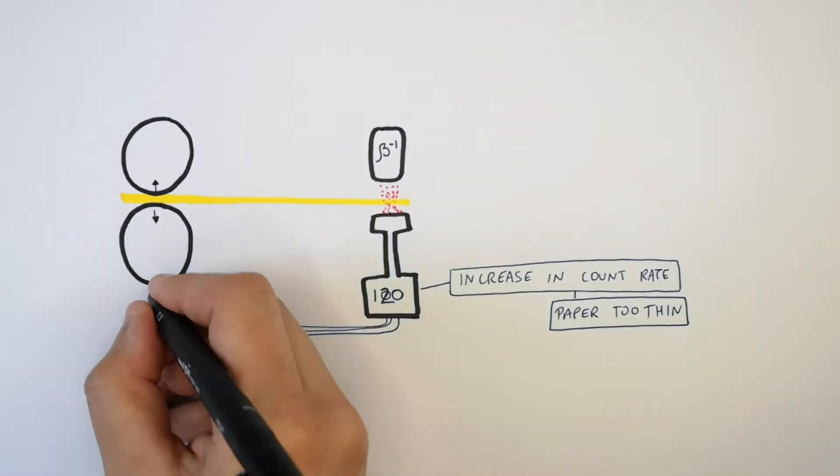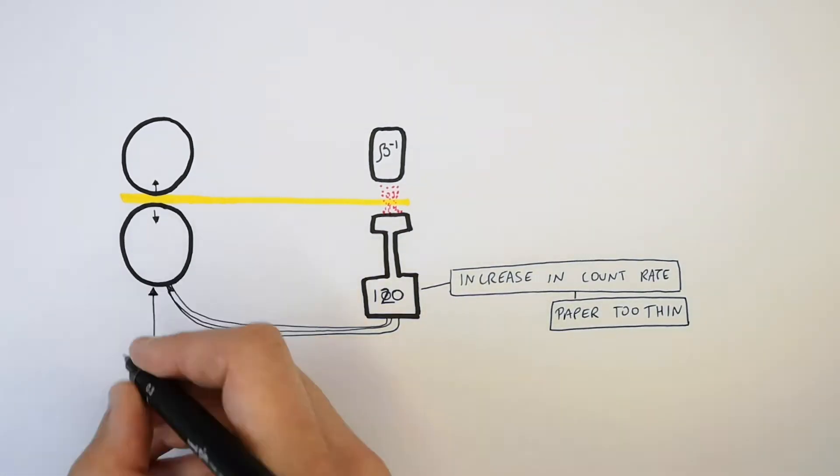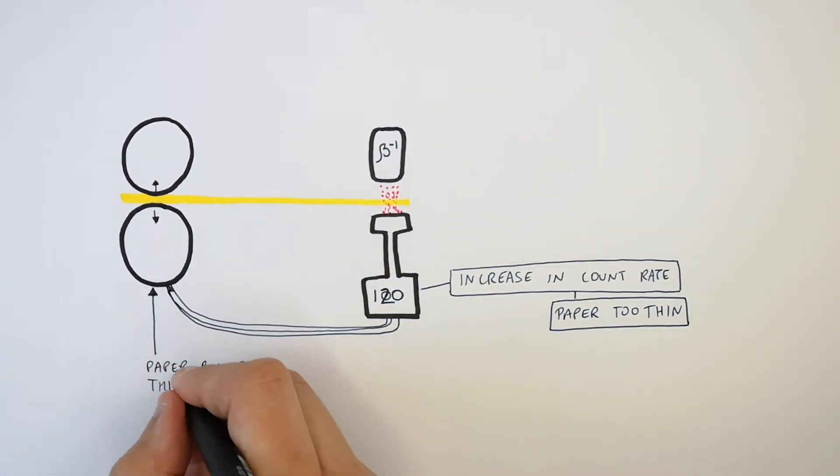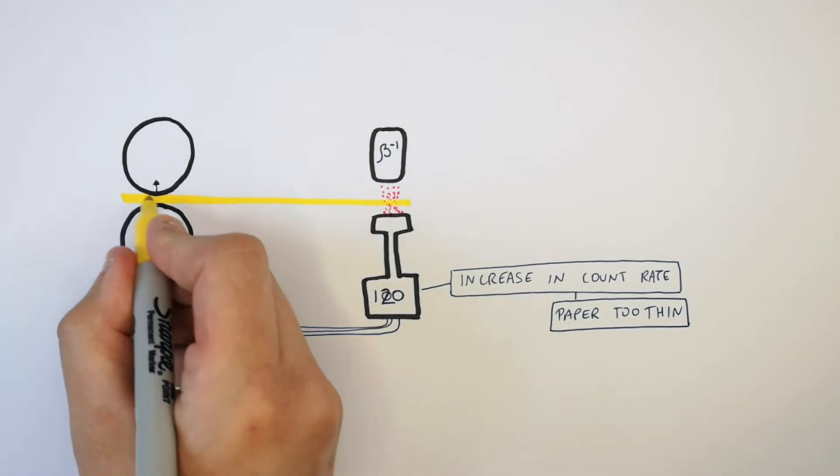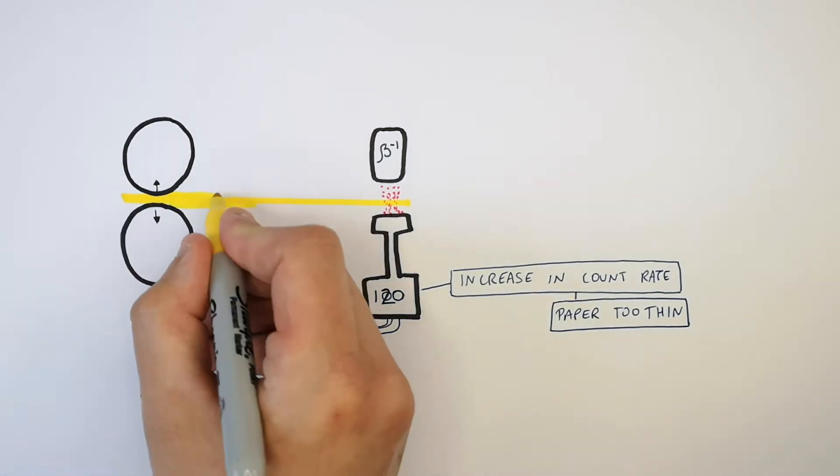That information gets fed back to the rollers, which then adjust so that the paper is rolled thicker. As you can see, the paper is now being rolled thicker.